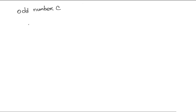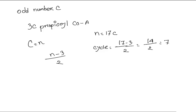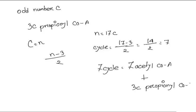You might be wondering what will happen in the odd-chain fatty acid. In odd-chain fatty acids there is an odd number of carbons. In this case, at the final stage a three-carbon propionyl-CoA will be generated. Suppose the number of carbons is n, which is an odd number. As at the end a three-carbon product will be generated, the number of cycles will be (n − 3) / 2. For example, if it's a 17-carbon fatty acid, the number of cycles will be (17 − 3) / 2, which is 7. So in seven cycles, seven acetyl-CoA will be produced, and at the end of the seventh turn a three-carbon propionyl-CoA will be generated. This is how fatty acid is oxidized by the process of beta oxidation. Thanks for watching — please like, share, and subscribe to our channel.